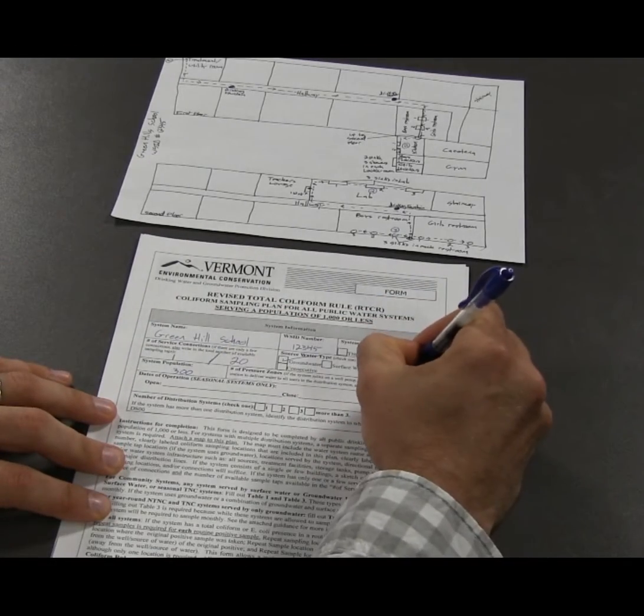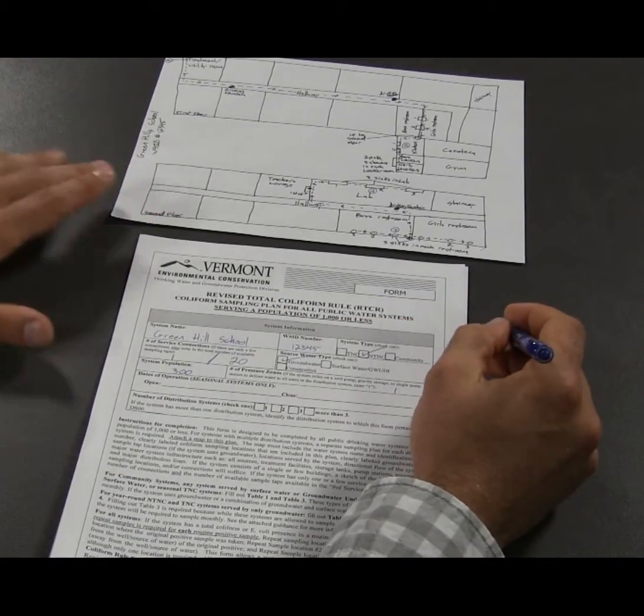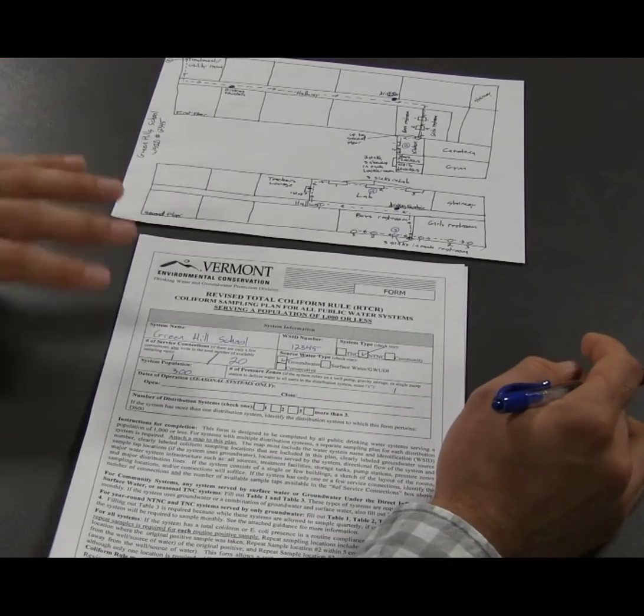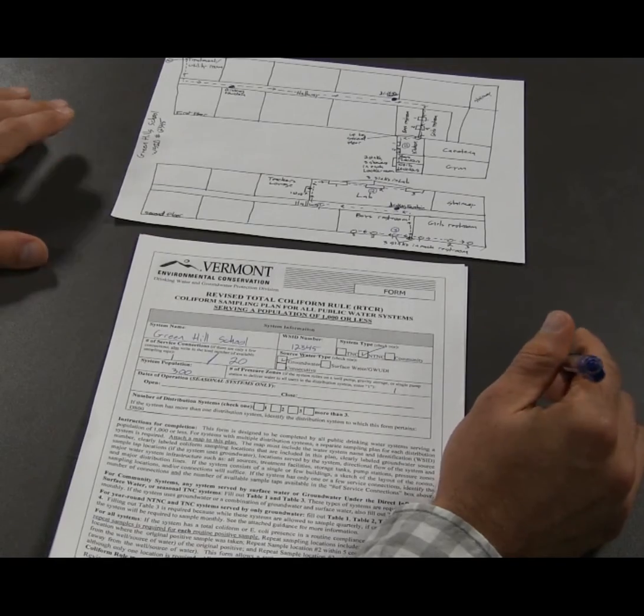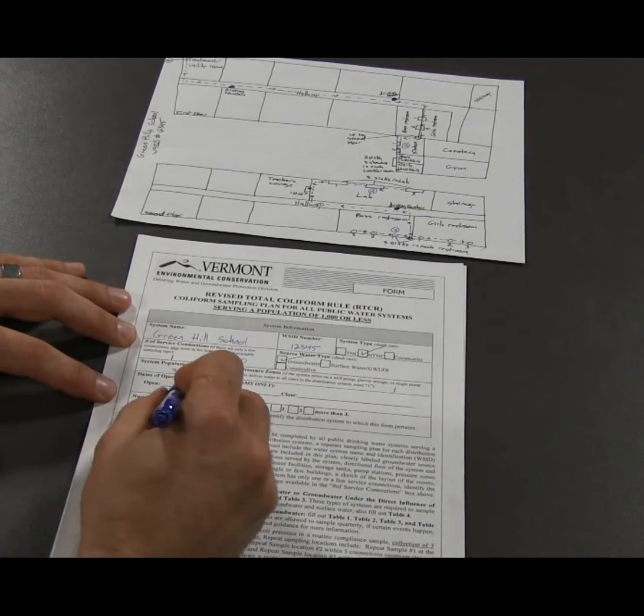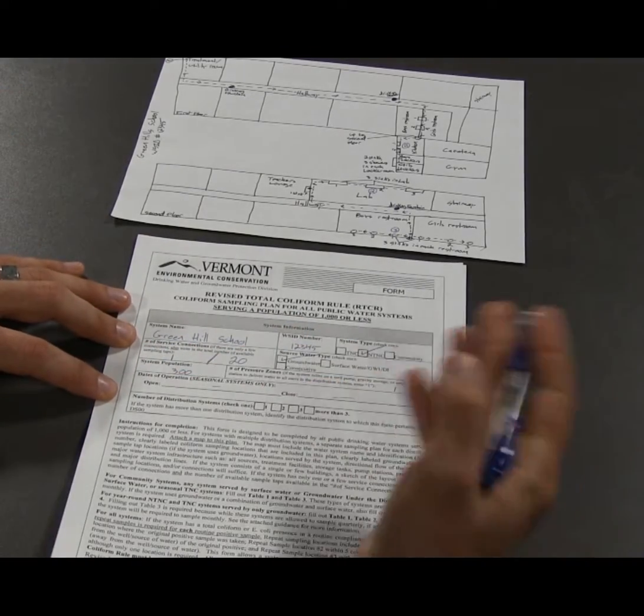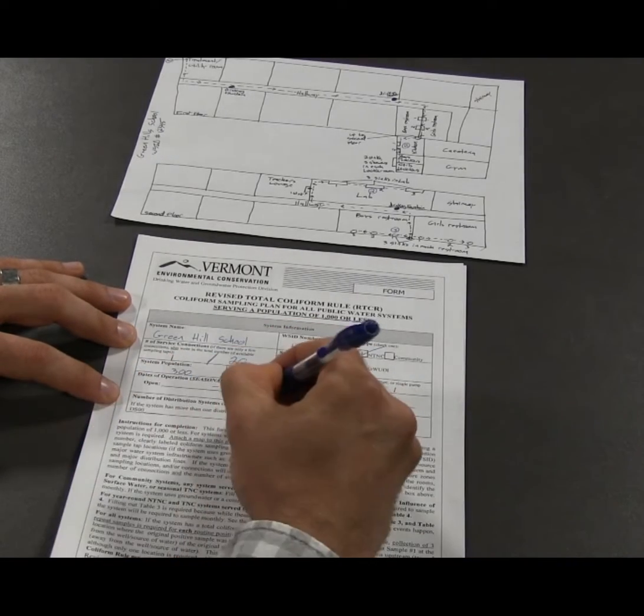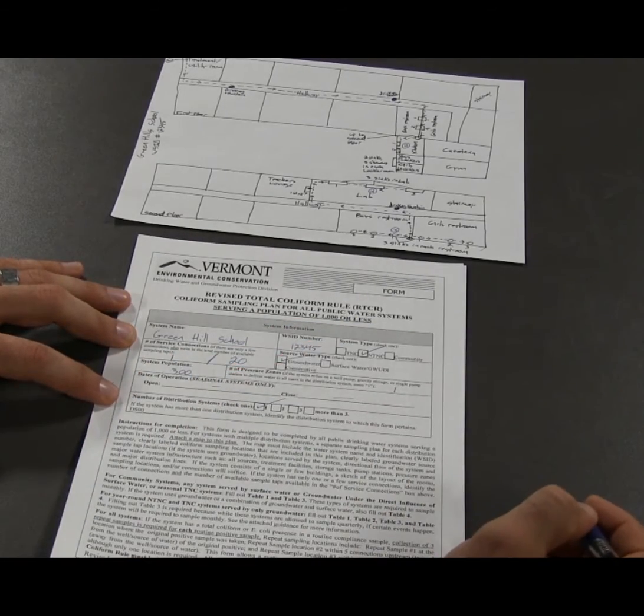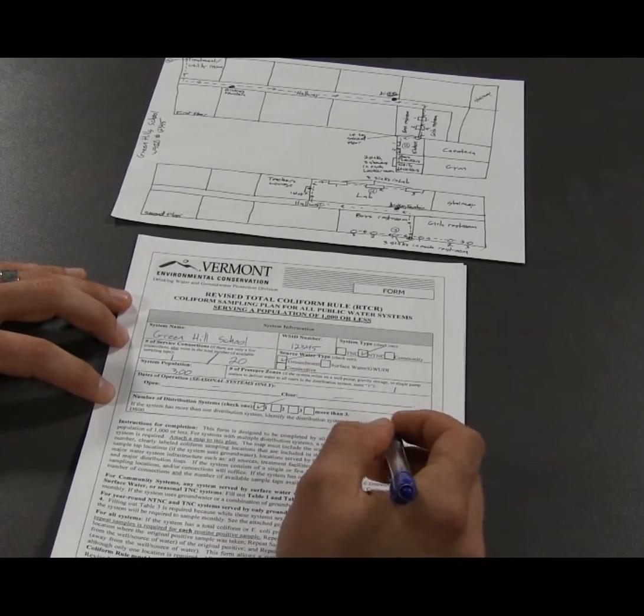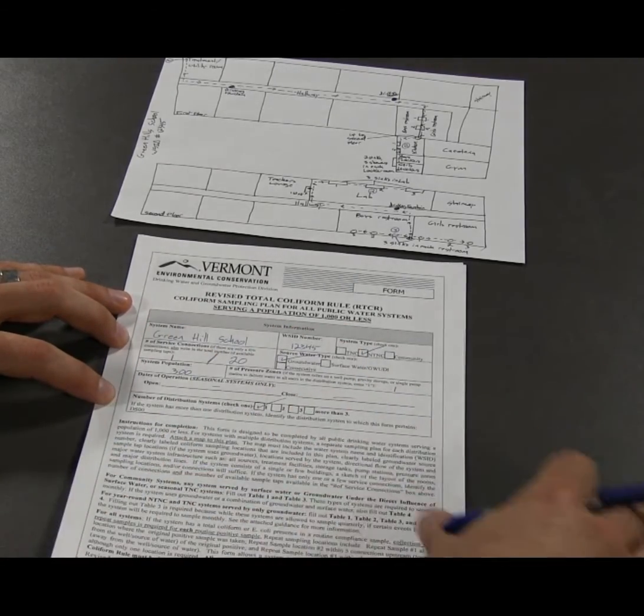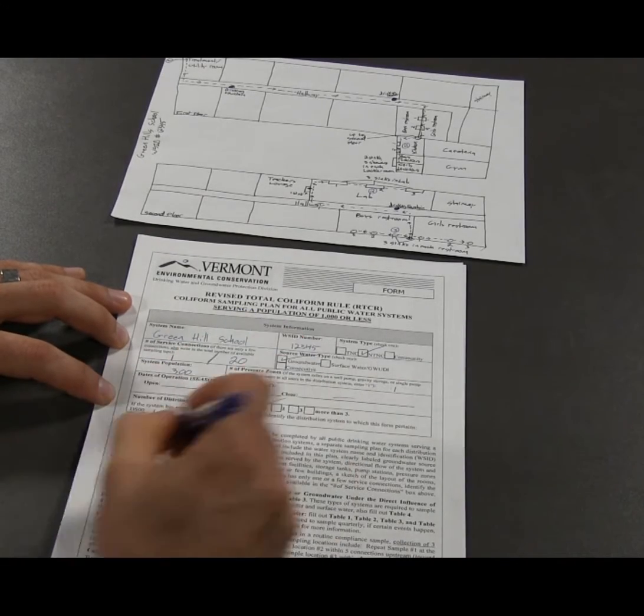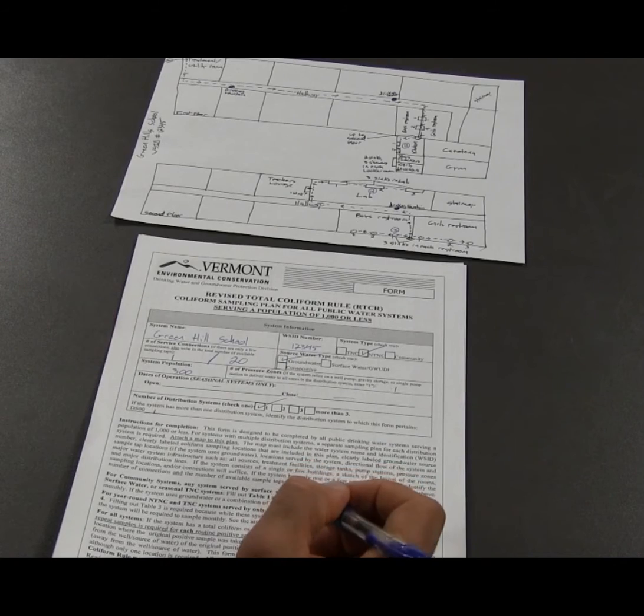Pressure zones - there's one pressure zone. Everybody in the system is served off the well pump. There's no booster pumps in the system, no other zones. Everything is on the same pressure zone, so that's one. Dates of operation is not applicable - it's not a seasonal system, it's a year-round system. The system only has one distribution system, so you check the box there. If there are multiple distribution systems, you need to have a plan for each individual distribution system.